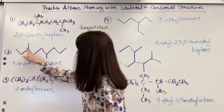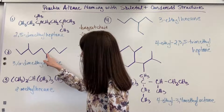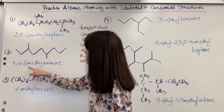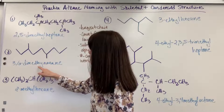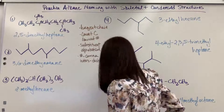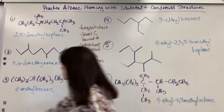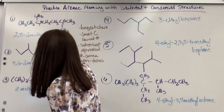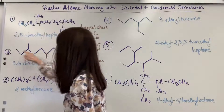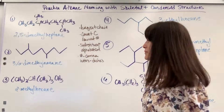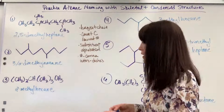So three comma six — my three carbon and my six carbon — dimethyl, because we've got two methyls, and nonane because the nonane was my longest chain. So again, the three carbon, the six carbon, two methyl groups — dimethyl — and my longest chain was nine, all single bonded — nonane. Very good.